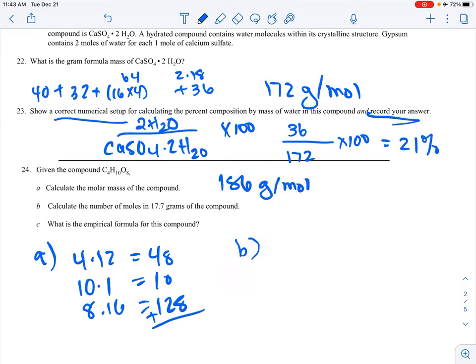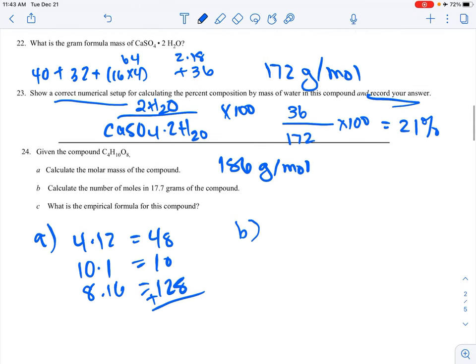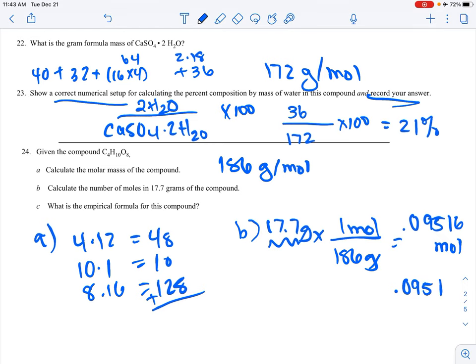Part B says calculate the number of moles in 17.7 grams of this. 17.7 grams, it's 186 grams per one mole. We're just going to divide. 17.7 divided by 186, we get 0.9516 moles. It did not ask us to round to sig figs. If I were to ask you, you take it from the given, which is 3, so that would be 0.951 moles.